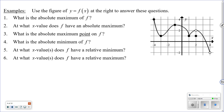Here's a graph example to apply the vocabulary. What is the absolute maximum of f? That's asking what's the highest value the function ever reaches, which is four. At what x-value does f obtain that absolute maximum? That's at x equals negative four and x equals three. The absolute maximum point would be written as (negative four, four).